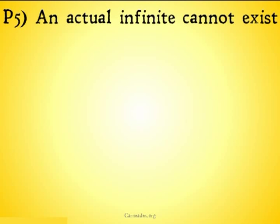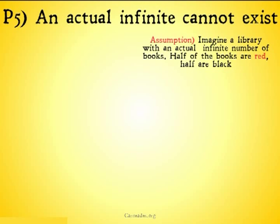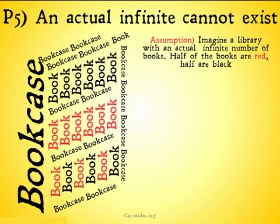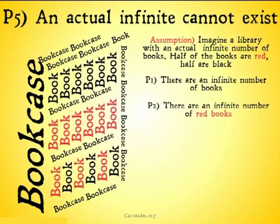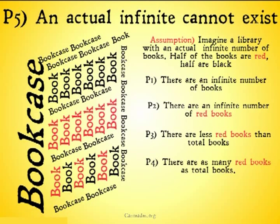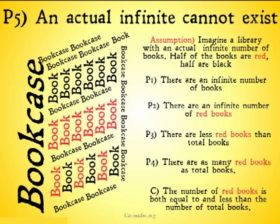So first off, an actual infinite cannot exist. Craig gives us a lovely thought experiment and following argument to defend this premise. He says imagine a library with an actual infinite number of books. Half the books are red and half are black. The argument goes as follows: P1, there are an infinite number of books in the library. P2, there are an infinite number of red books in the library. P3, there are less red books than total books because only half of the books are red. P4, there are also as many red books as total books because there are an infinite number of each. Therefore, the number of red books is both equal to and less than the total number of books. So there is some problem in one of our initial assumptions. Craig is going to say that the problem lies in saying that an actual infinite can exist.